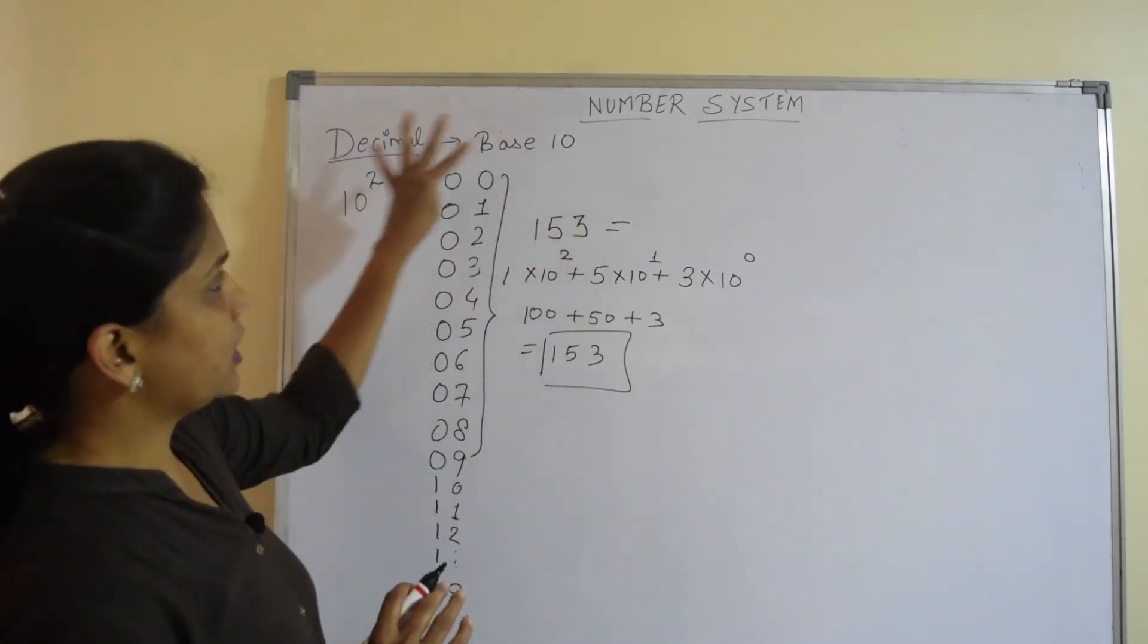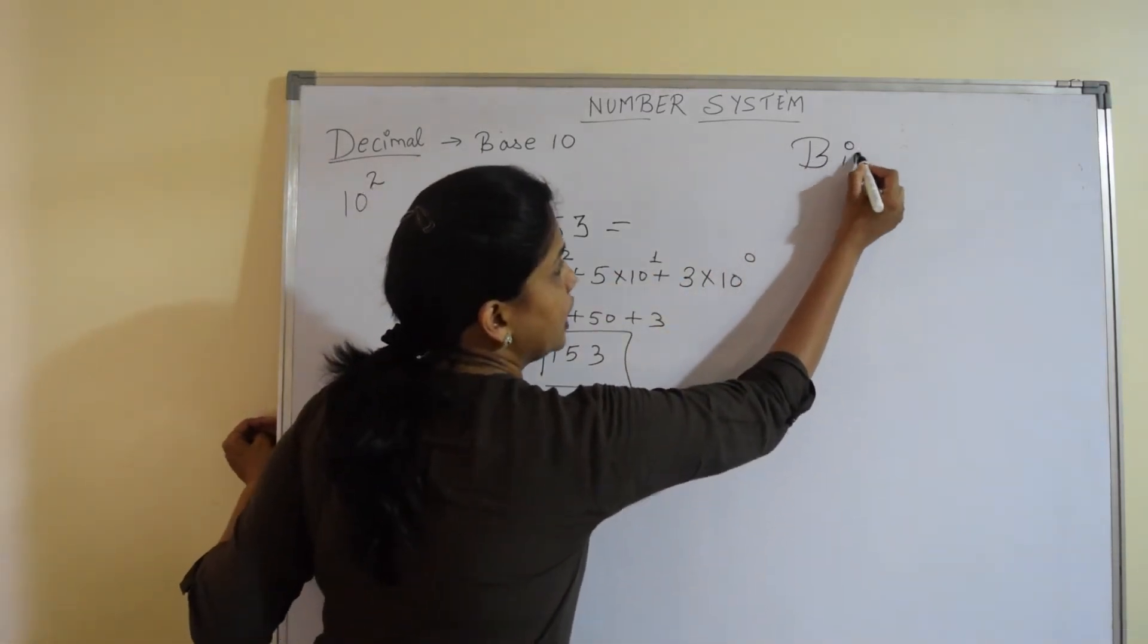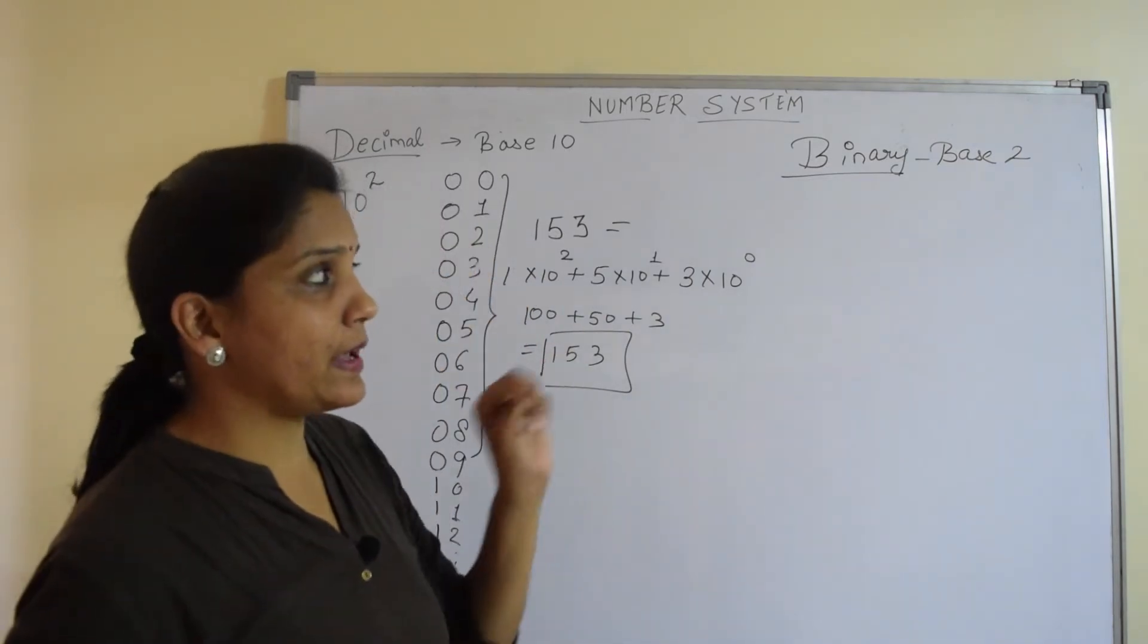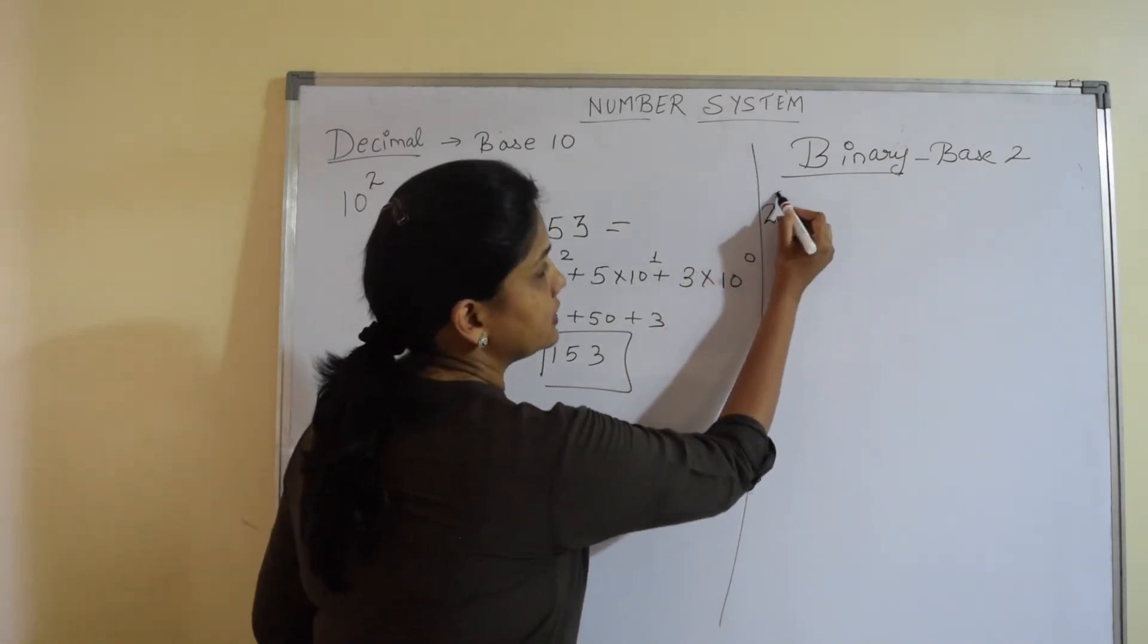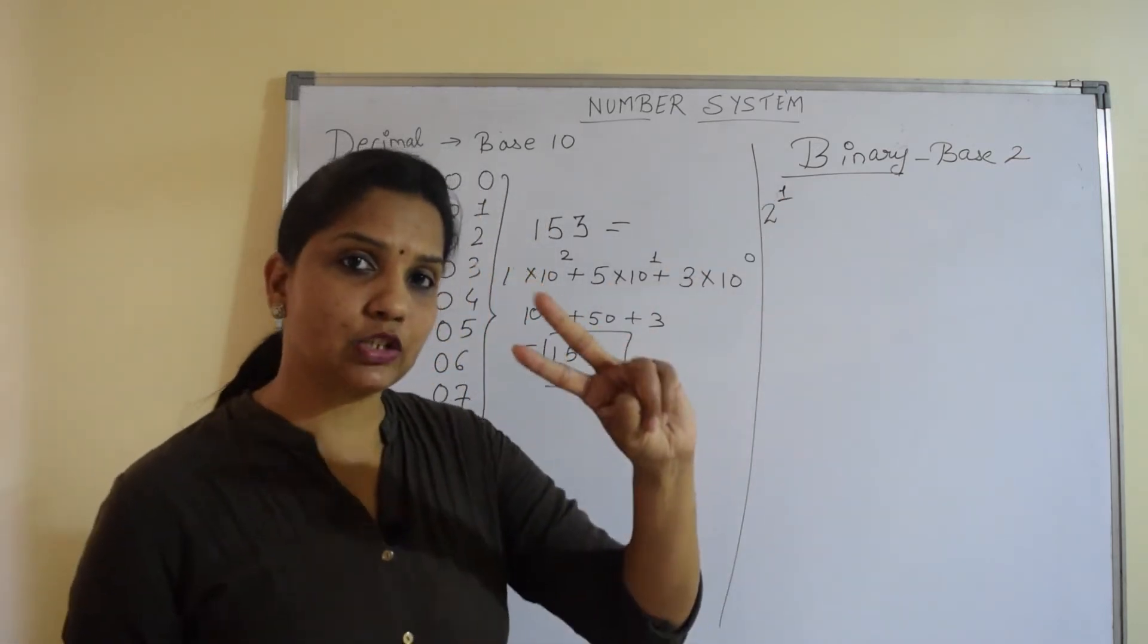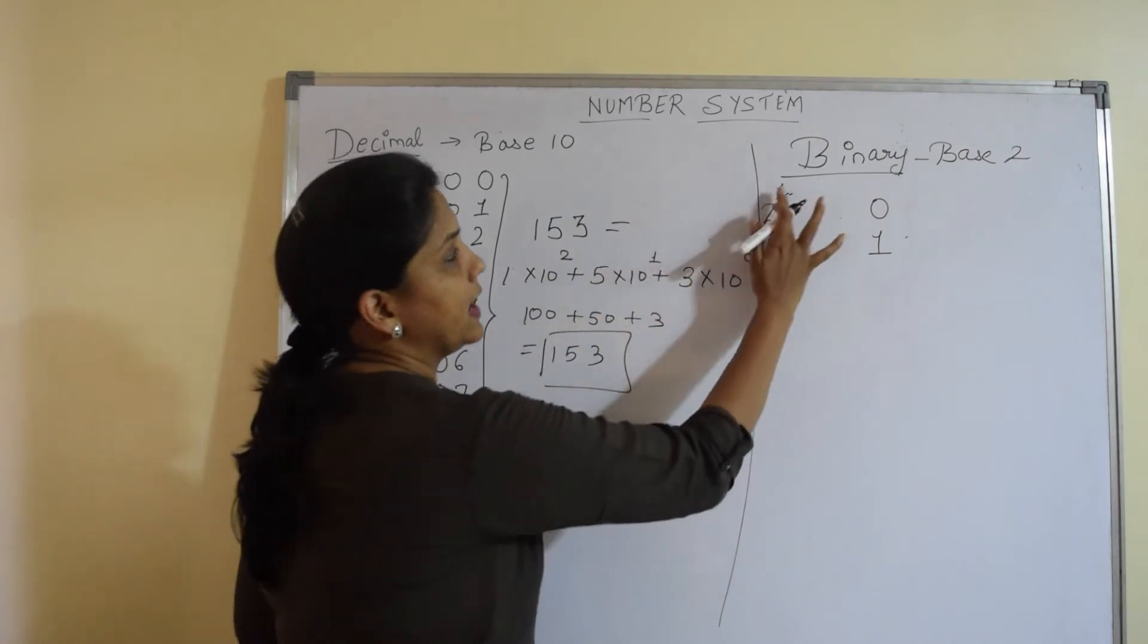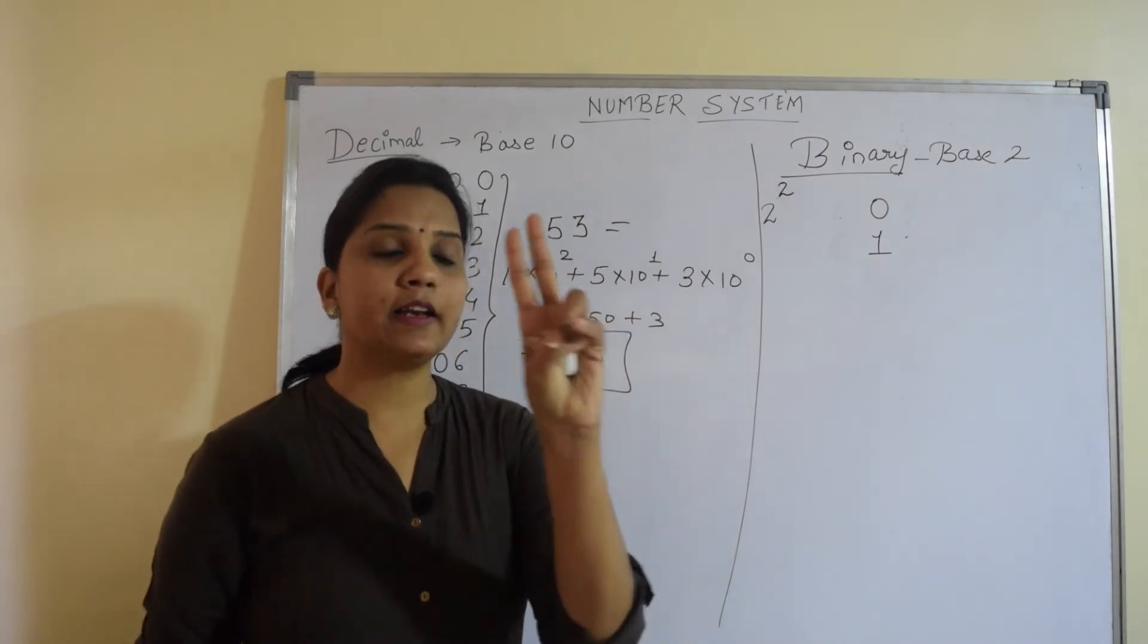Now since we are aware about this decimal number system, let's see how the binary number system works. The binary number system has a base of 2. Now because it has a base of 2, to create single digit numbers 2 to the power 1, that means I can create at the max 2 numbers, that is 0 and 1. If you want to create 2 digit binary numbers, I can say 2 to the power 2, that is I can create at the max 4 binary 2 digit numbers.